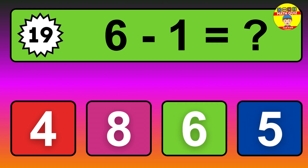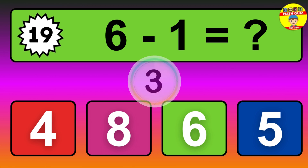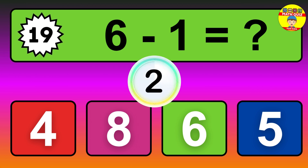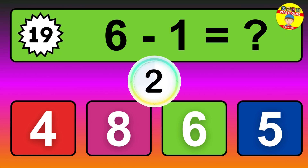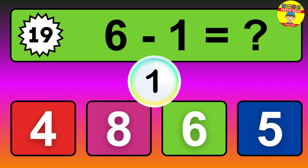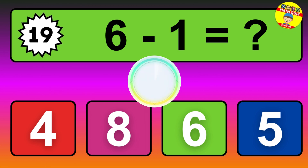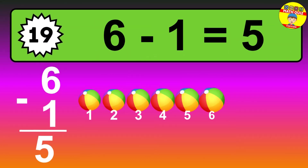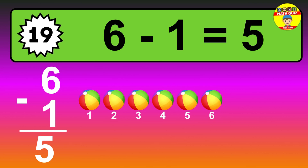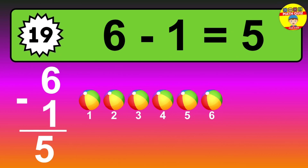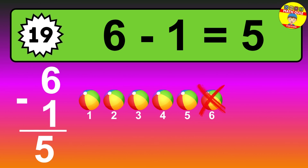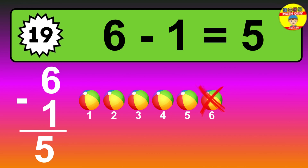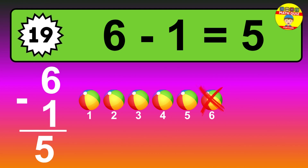Question nineteen: six minus one equals what? The answer is six minus one is five. Let's count it: one, two, three, four, five.